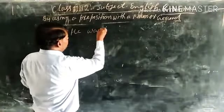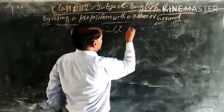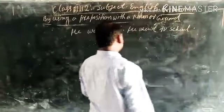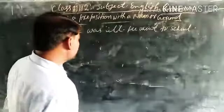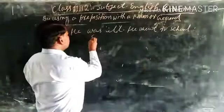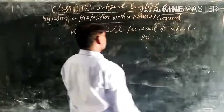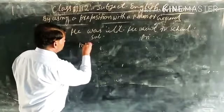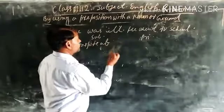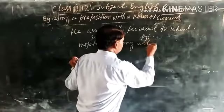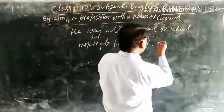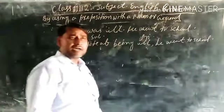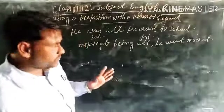Next example: 'He was ill. He went to school.' Here are two sentences — 'He was ill' is the subordinate clause and 'He went to school' is the principal clause. First, you write the appropriate preposition phrase. The subordinate clause becomes 'In spite of being ill.' The combined sentence is: 'In spite of being ill, he went to school.'